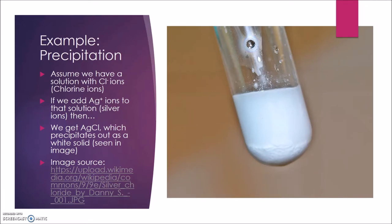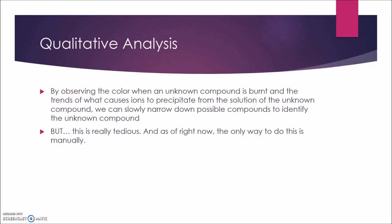However, this process is very tedious and lengthy because identifying the compound requires comparing the observed data with trends of hundreds of different compounds. This process is made even more difficult by the fact that there is no easily accessible resource to look up these trends, so doing qualitative analysis requires chemists to purchase expensive books or fragment the trends together from many different websites.